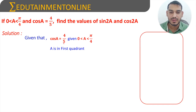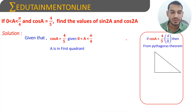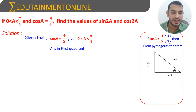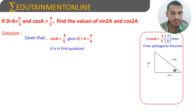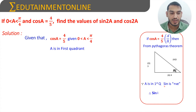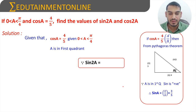Since cos A equals 4/5, and cos θ is adjacent side by hypotenuse, we write the adjacent side as 4 and the hypotenuse as 5. Using the Pythagorean theorem, we can find the opposite side as 3. Since A is in the first quadrant, all trigonometric ratios are positive, so sin A equals opposite side by hypotenuse, which is 3/5.